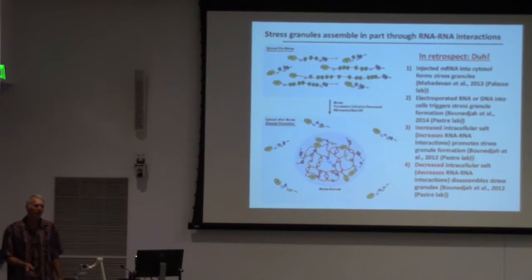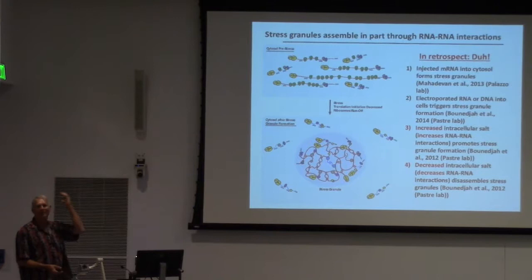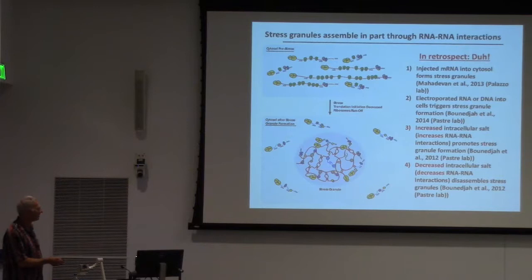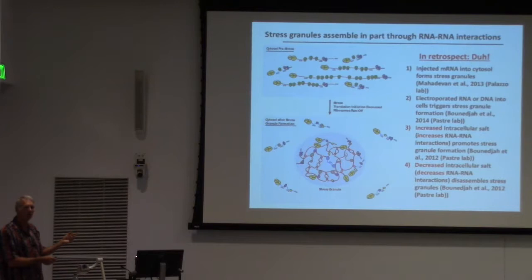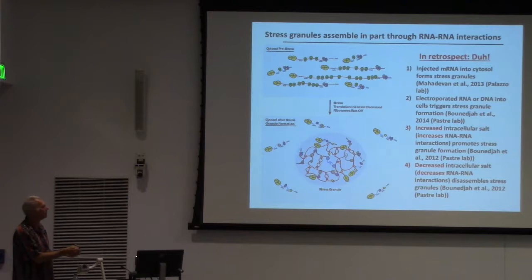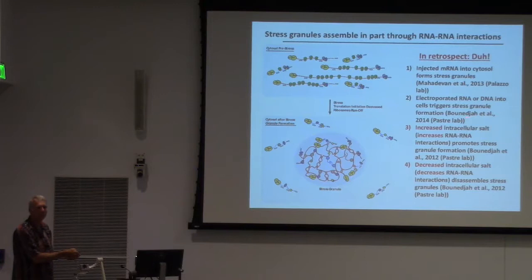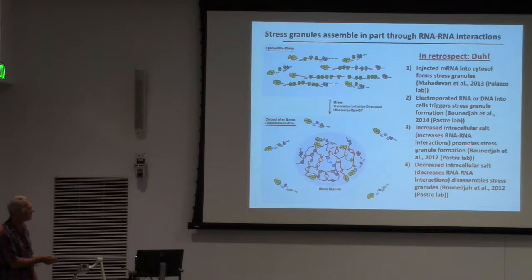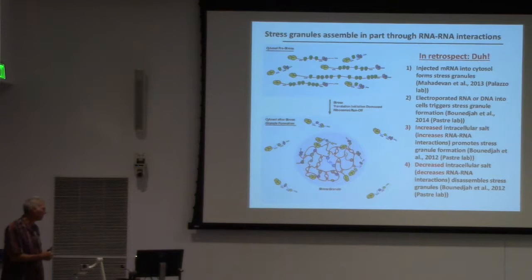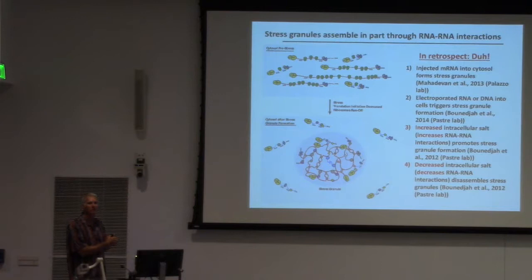Once you have a new idea, you look in the literature and go: of course! It turns out there are all kinds of observations that should have told us this many years ago. If you just inject RNA into the cytosol, you get an RNA focus, and that focus then recruits stress granule proteins. If you electroporate RNA or even DNA into cells, you get stress granule assembly. If you increase salt in the cells—salt increases RNA-RNA interactions by stabilizing electrostatic repulsions—you increase stress granule formation. If you decrease salt, stress granules fall apart. All these things support the idea that stress granules are RNA-driven condensates.